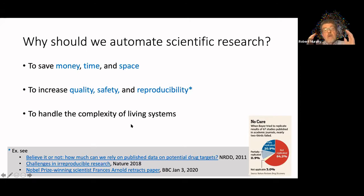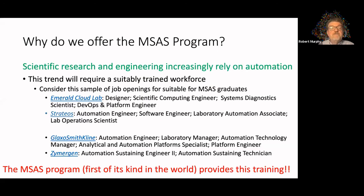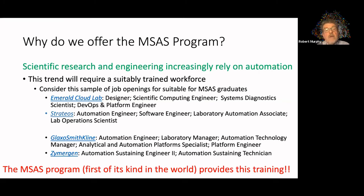All of this is necessary in biomedical research because living systems are so much more complicated than most of us ever really imagined. We need the ability to study very large experimental spaces in order to understand living systems — hence automated science. This is clearly what the future of experimental science looks like, at least in biology and probably in chemistry and material science as well. Starting the program a couple of years ago, we recognized that there were a lot of openings that people were looking for in this general space.